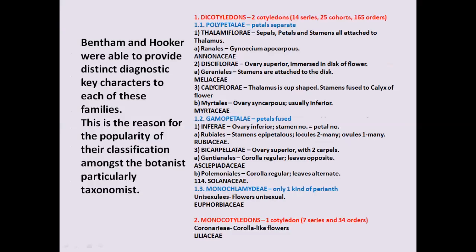Bentham and Hooker were able to provide distinct diagnostic characters to each of the families. This is the reason for the popularity of their classification among botanists, particularly among taxonomists. Each group in this classification is provided with its diagnostic characters, with the help of which a student of botany can easily recognize any plant and assign it to its particular group.